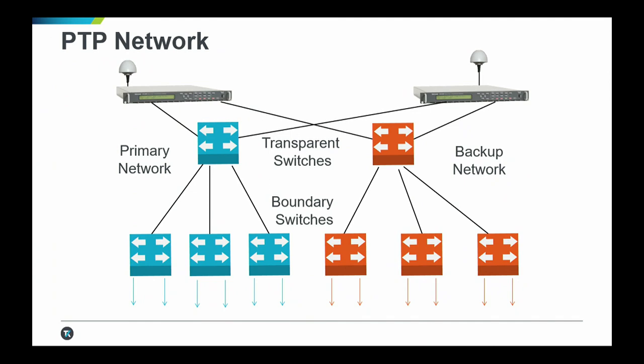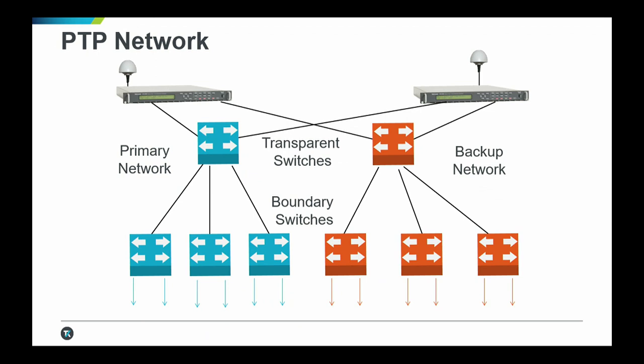Briefly talked about in the previous presentation — transparent switches and boundary switches. From what I'm hearing from the front lines, when in doubt, put in a boundary clock. If you look at it, it's kind of like an org chart in a corporation or a chain of command in the military. You have the general at the top and all devices down below — perhaps hundreds if not thousands — so you need a chain of command. The lead clock does not want to be bothered answering all the requests from hundreds of devices. The boundary clock divides the network. It's the same thing in timing a network.